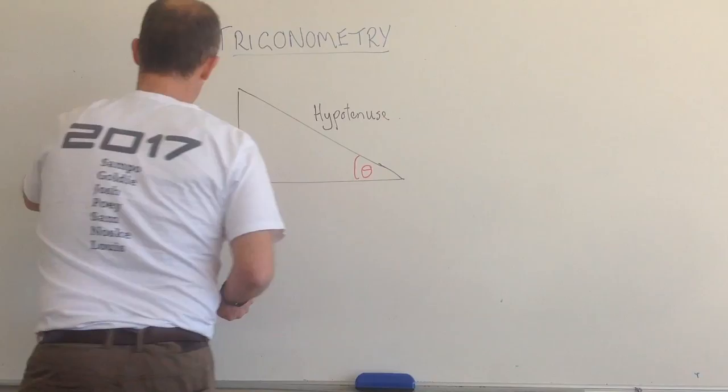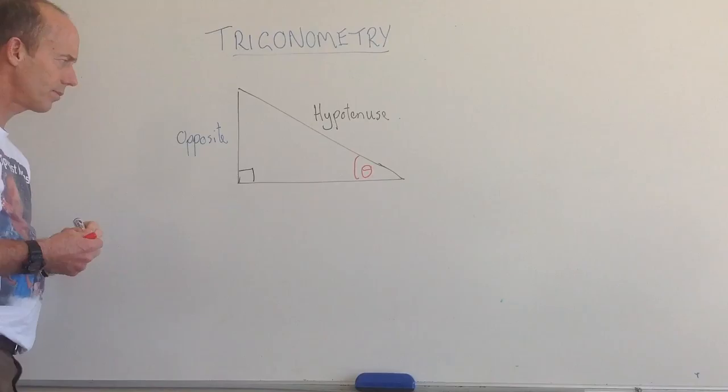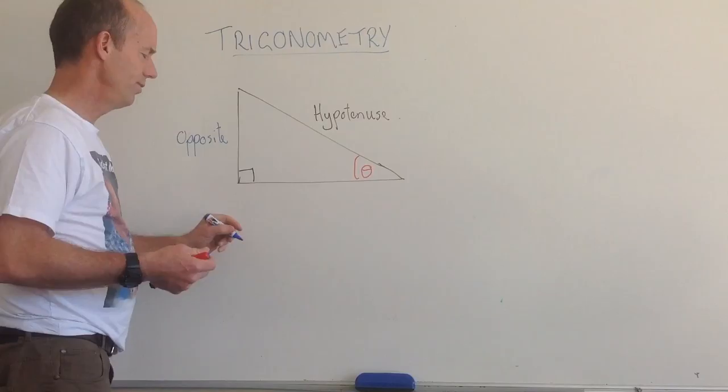But when we do that we have to label these other two sides, and we label these two sides relative to this angle. So this side that is opposite the angle is called the opposite side.